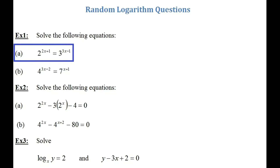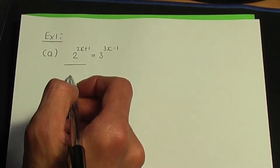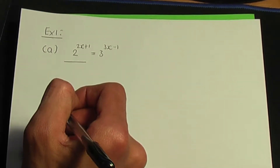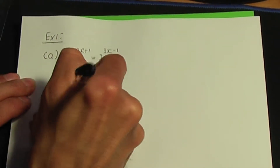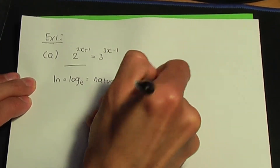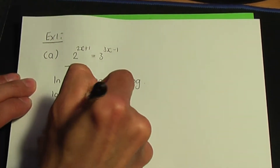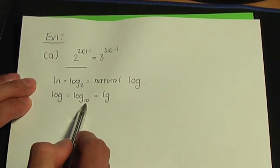Back to the paper and pen. To solve an equation like this, I'm going to take logarithms on both sides. You can take log to the base 10 on both sides, or you can take ln on both sides. ln means natural logarithm — log to the base e. Log means log to the base 10; some people also write lg, which also means log to the base 10.